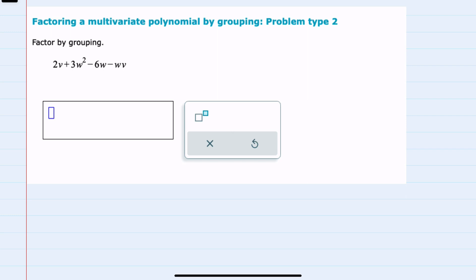We're told that we'll be factoring by grouping. However, when I group the first two terms together and the last two terms together, from the first two terms there's nothing that we'll factor out.